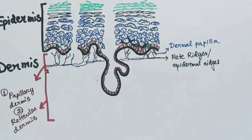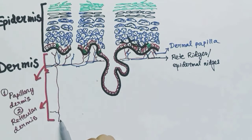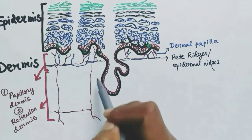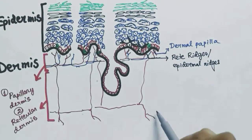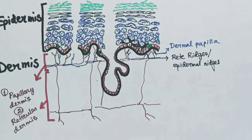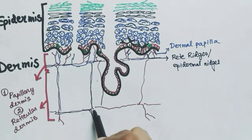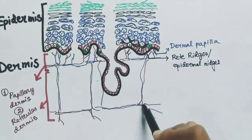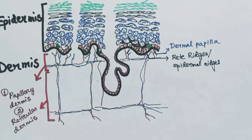The blood supply in the dermis is highly vascular near the epidermis, that is in the papillary dermis, and less vascular in the reticular dermis. The first component of the reticular dermis is the hair follicle.